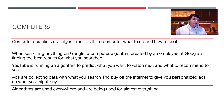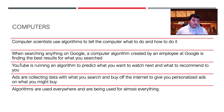Computer scientists use algorithms to tell a computer what to do and how to do it. When you search anything on Google, a computer algorithm created by an employee at Google is finding the best results for what you've searched. YouTube is also running an algorithm to predict what you want to watch next and what recommended videos to push to you. Ads collect data on what you search and buy across the internet to give you personalized ads on what you might buy next. Algorithms are used everywhere and are being used for almost everything.